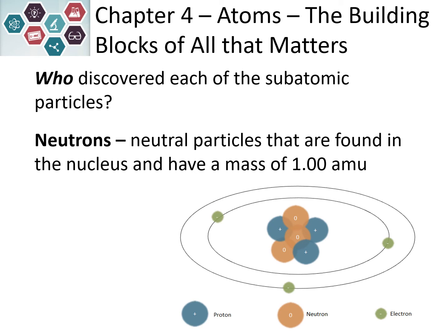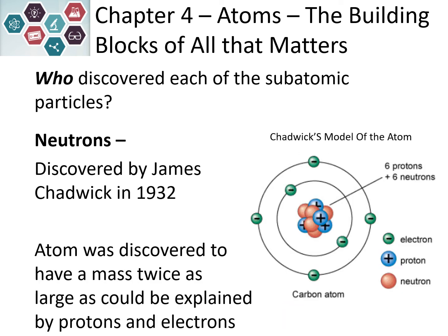Neutrons are neutral particles found in the nucleus with a mass of about one atomic mass unit, usually represented with a zero or a blank sphere. They were discovered by James Chadwick in 1932. They were found because the mass of atoms was roughly twice as large as predicted by having only protons — it couldn't be explained with just protons and electrons. So it was determined there must be another particle with no charge in the nucleus, and these were neutrons. Now we have protons and neutrons in the nucleus with electrons in the orbitals around it.